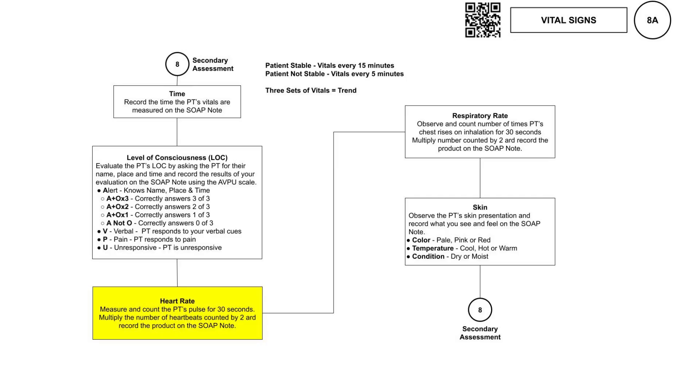Now let's talk about measuring heart and respiratory rates. Accurately measuring these rates involves a discrete observation method to prevent altering the patient's breathing pattern. Patients tend to slow down their breathing when they know it's being observed. By pretending to measure the pulse while counting breaths, both rates can be accurately assessed. Position yourself so you can see your watch and the patient's chest while measuring a radial pulse. Count heartbeats for 30 seconds, remember the number, then count chest rises for 30 seconds. Double the counts for a full-minute estimation.